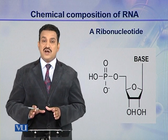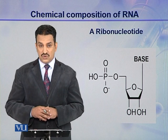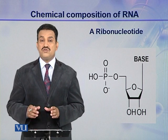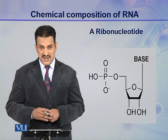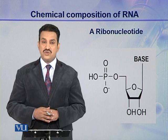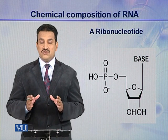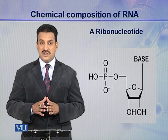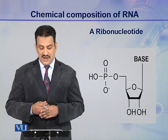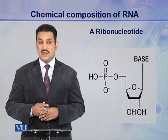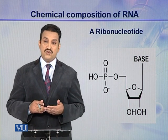This is a complete ribonucleotide. It consists of all three components: a nitrogenous base, a pentose sugar, and a phosphoric acid. These three components are joined together and they make a ribonucleotide. And this ribonucleotide, by combining with other ribonucleotides, makes a ribonucleic acid.